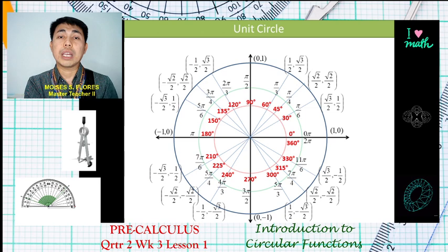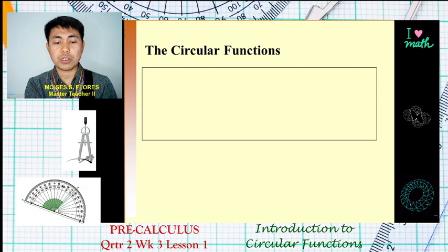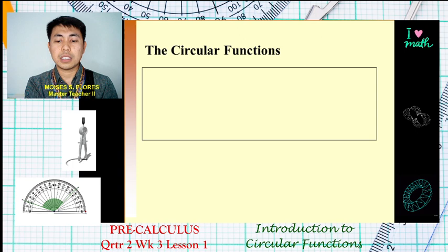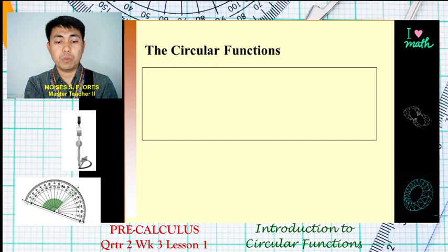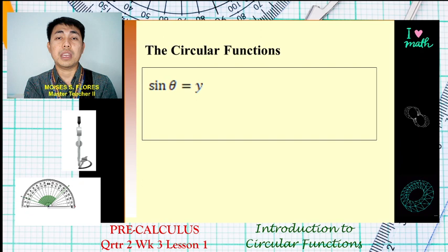So those are the coordinates of our unit circle. Now let us introduce circular functions. We define the six trigonometric functions such that the domain of each function is the set of angles in standard position, measured either in degrees or in radians. In our lesson, we modify these so the domain will be real numbers rather than angles.